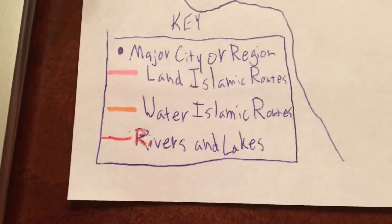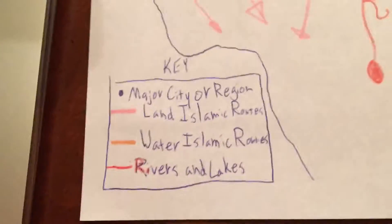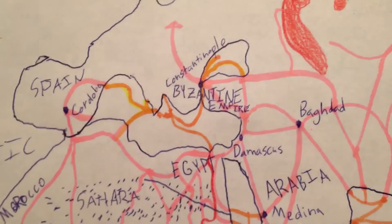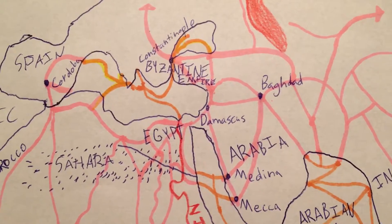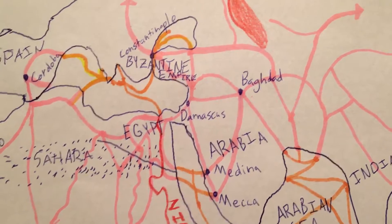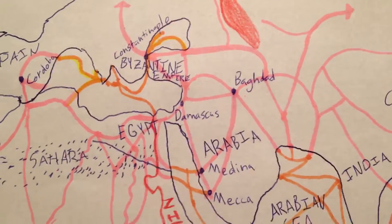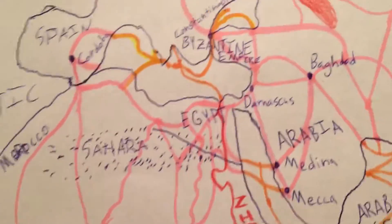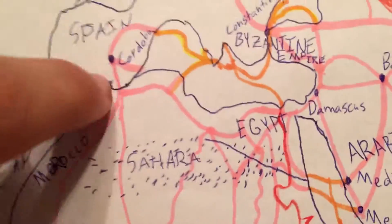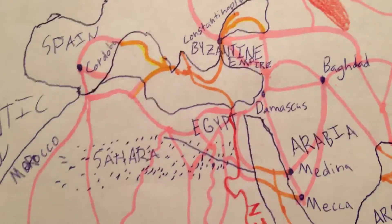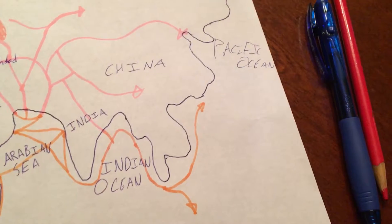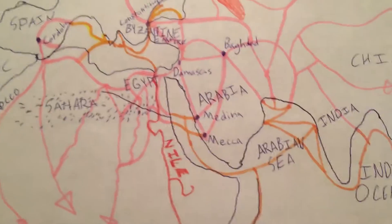Next is the orange lines for the water routes. Some of these are in the Mediterranean Sea, which helped Islam spread a lot quicker than having to go all the way around through Spain or through here just to go over the water. It also went up into China.